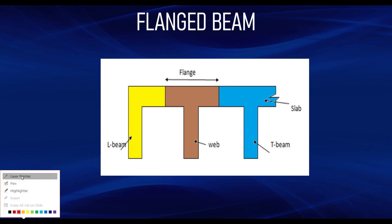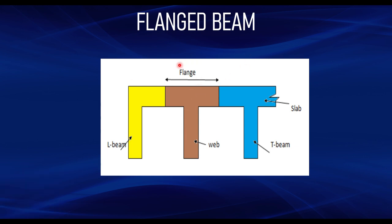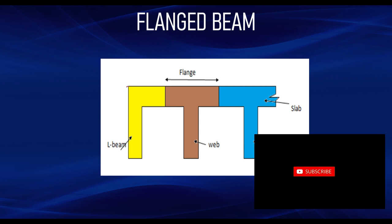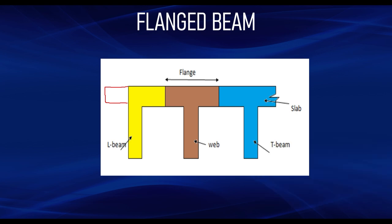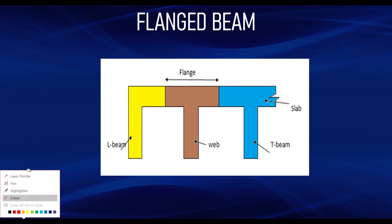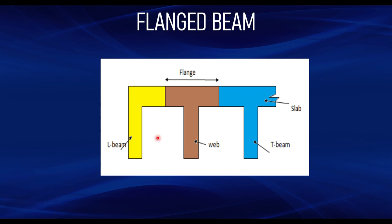The T beam is the beam that is in the intermediate part of the slab — you have slab at the top on the left and right side of it. But when it is the end part of the beam, it is considered as an L beam, because in this case there is no slab attached to the other side. If there is slab attached on one side only, it is considered as an L beam.